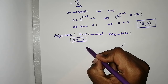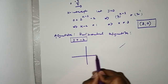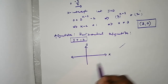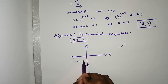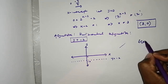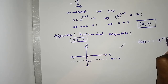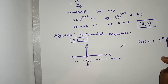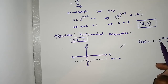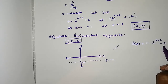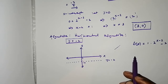Now we can sketch the function. If you're asked to find extra points, you can find f(0), f(1), f(negative 2). We know the horizontal asymptote is at y = negative 2. Since a is positive, our function will be increasing. The x minus 2 means the function is shifted 2 units to the right, and the negative 2 means it is shifted 2 units downwards.